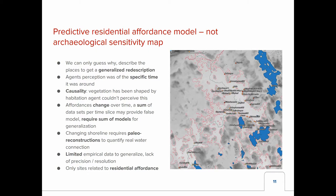When talking about affordances, it's not so simple. We can only create a generalized re-description of the situation we know. There are a lot of differences from usual locational models: it's always a specific time an agent is around, not a long period. There is a causality — for example, vegetation has often been changed by humans, not vice versa. The affordance changes over time, and different time slices actually provide a false model which requires a sum of models. Things like reconstructing past shorelines require a lot of multidisciplinary work.